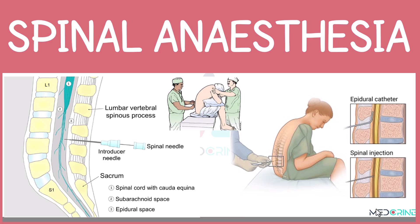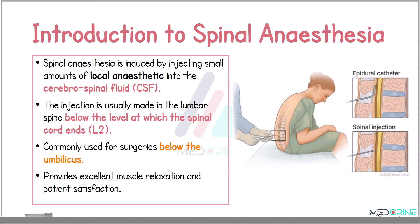Welcome to this presentation on spinal anesthesia. Spinal anesthesia is a regional technique of administering anesthesia that involves injecting a small amount of local anesthetic drugs into the cerebrospinal fluid. The injection is usually made in the lumbar spine below the level at which the spinal cord ends, that is usually at the second lumbar vertebra. This ensures safety and effectiveness of the anesthesia.